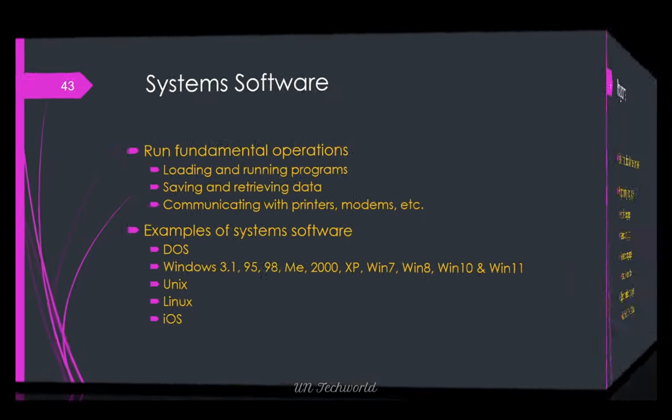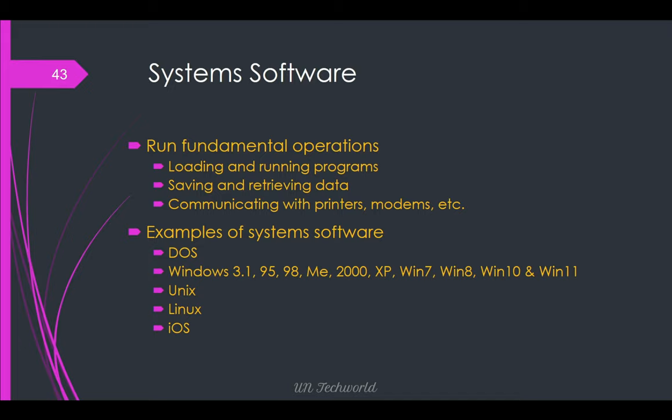System software runs fundamental operations: loading and running programs, saving and retrieving data, communicating with printer, modem, pen drive, hard disk, etc. An example of system software is DOS — Disk Operating System. In earlier days, DOS was used with only keyboard control, with no mouse, as DOS operation is only command-line control.